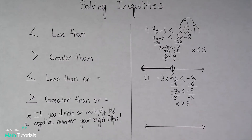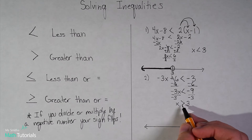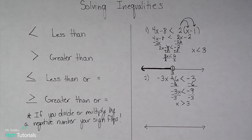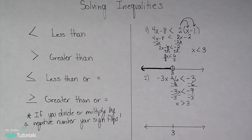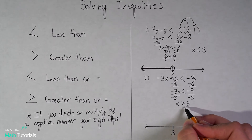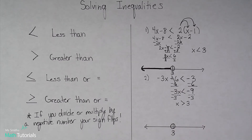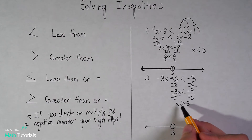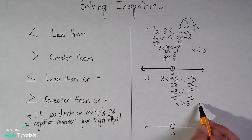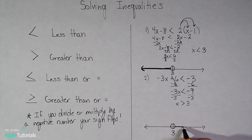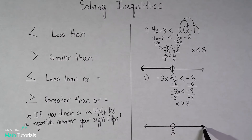Let's graph this answer. We got x is greater than 3, so I'll have my center number be 3. Again, this is not an or-equal-to — it doesn't have a line underneath it — so I keep my circle open. That tells me 3 is not actually included. And remember, as long as your variable is on the left, whatever way it's pointing, that's the way you shade. It's greater than 3 but doesn't include 3.